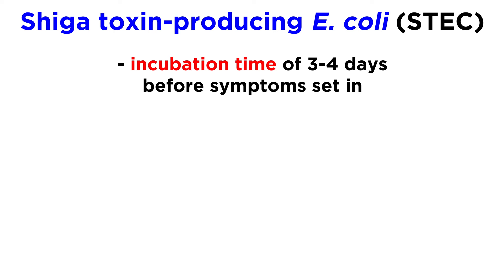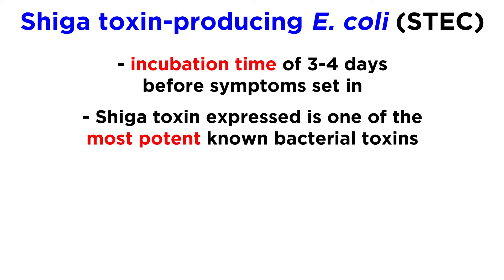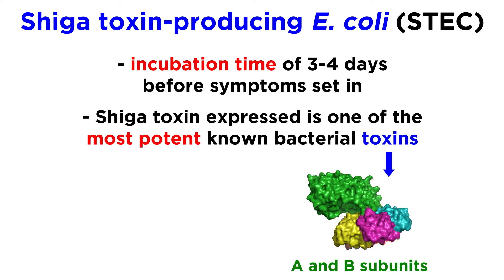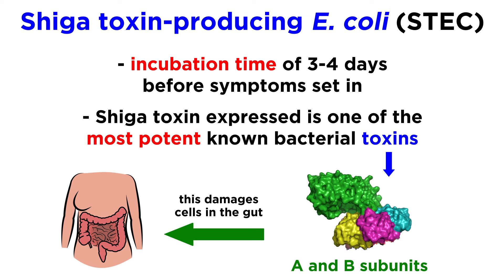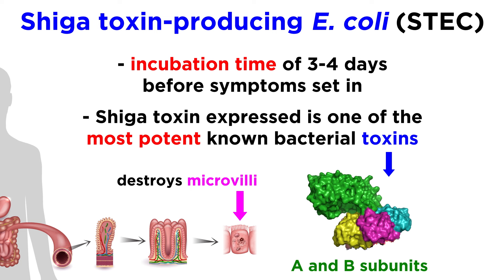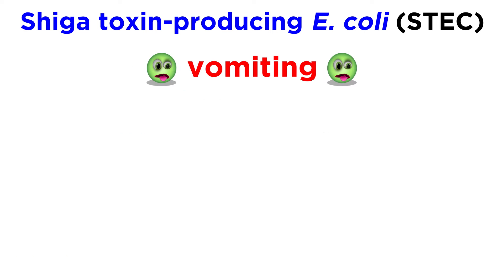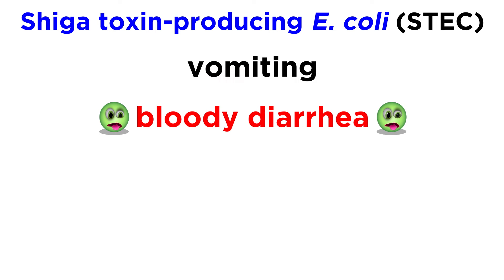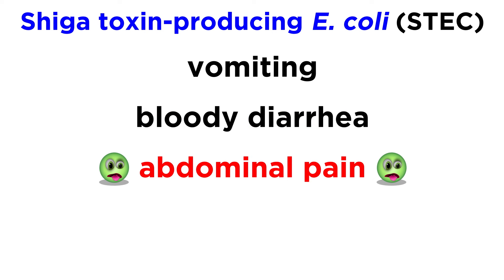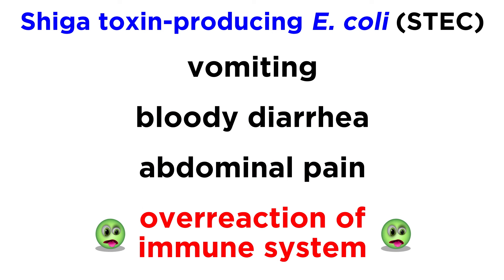In most cases, STEC infections have an incubation time of three to four days before symptoms set in. STEC strains, as their name suggests, express a Shiga toxin that is one of the most potent bacterial toxins known. Shiga toxins consist of two major subunits, A and B, which work together to damage cells in the gut. In particular, these toxins disrupt protein synthesis in healthy cells and cause destruction of intestinal microvilli, which are finger-like projections that typically help healthy cells absorb nutrients. In some cases, Shiga toxin can trigger an overreaction of the immune system to attack healthy cells as well.